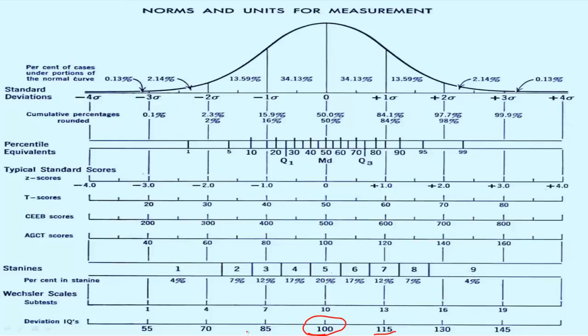So again, it's going to be on a normal curve. You've got negative one standard deviation is going to be 85 as an IQ, minus two standard deviations is going to be 70 as an IQ, plus one, 115, plus two, 130, plus three, 145. So that's going to be standard deviations.